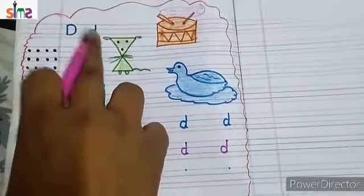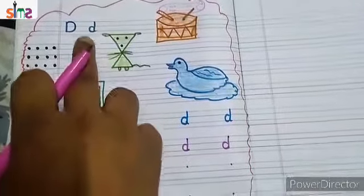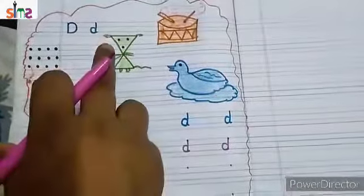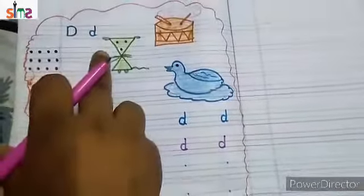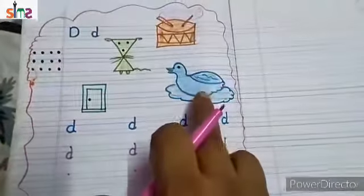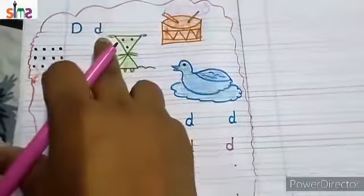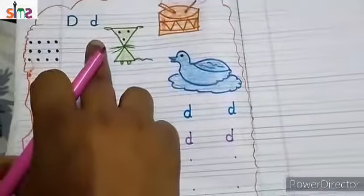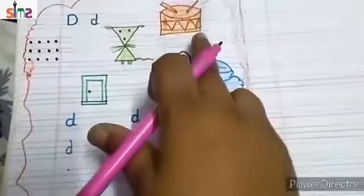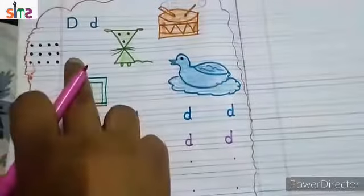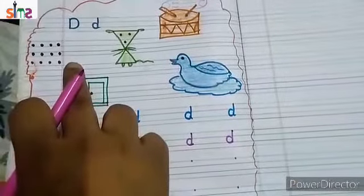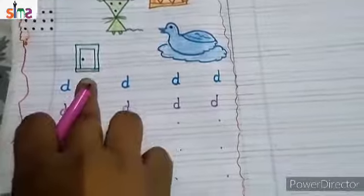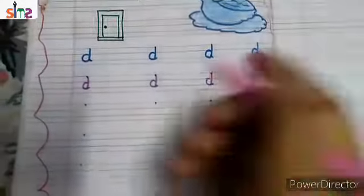D. D for dog, D for drum, D for duck, D for door. How to write small d?